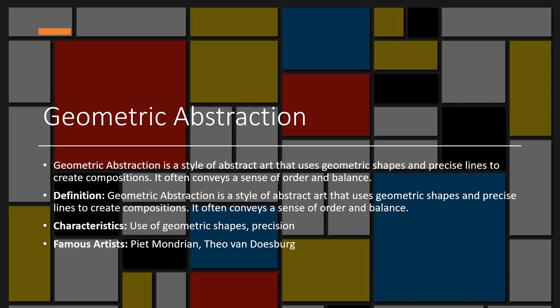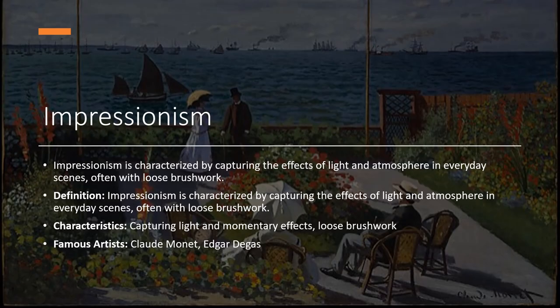Then you have geometric abstraction, defined as the style of abstract art that uses geometric shapes and precise lines to create compositions. It often conveys a sense of order and balance through the use of geometric shapes and precision. The picture in the background is by Piet Mondrian — probably the most famous painting of this style.